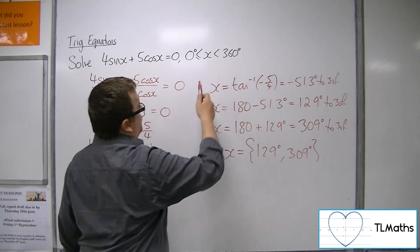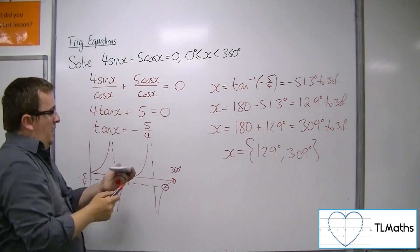They are the two solutions between 0 and 360 that solve the original problem.